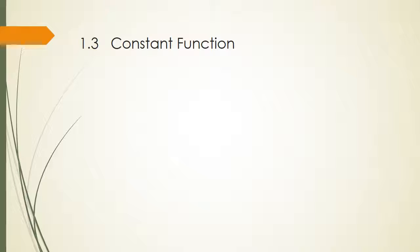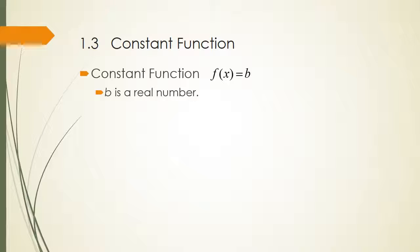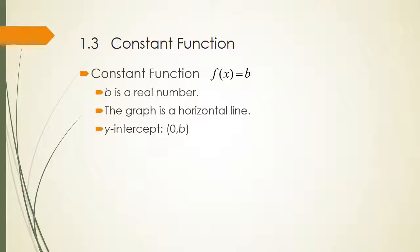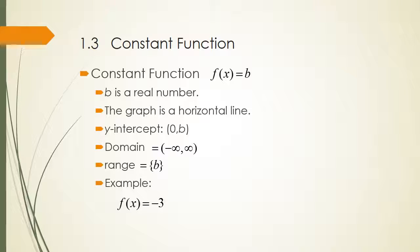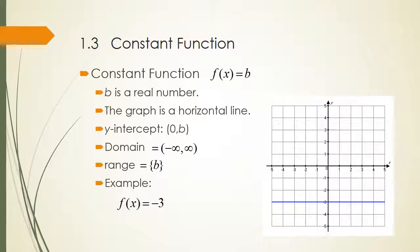Now let's talk about constant functions. A constant function is of the form f of x equals b, where b must be a real number, and its graph is a horizontal line. The y-intercept of the graph is the point (0, b). An example is f of x equals negative 3. No matter what value you put in for x, the y value doesn't change — it will always be negative 3.